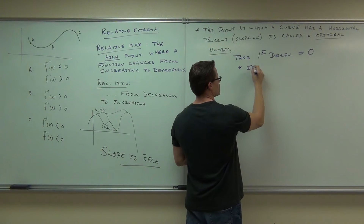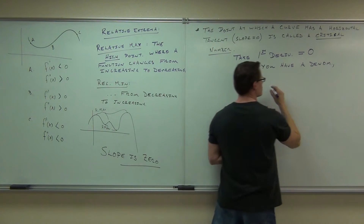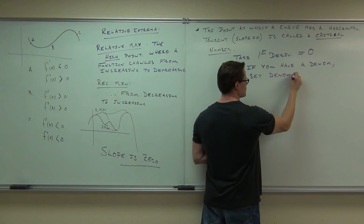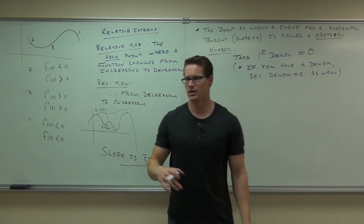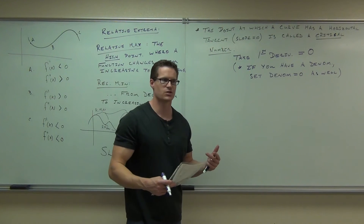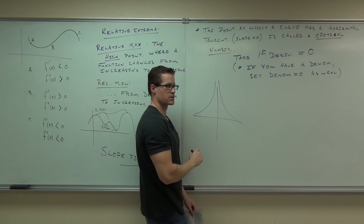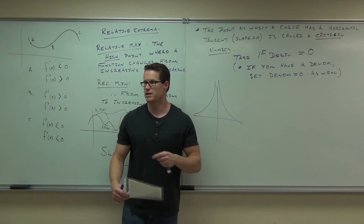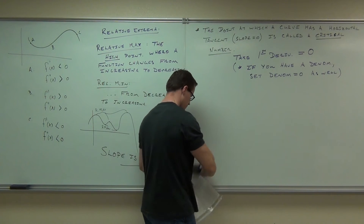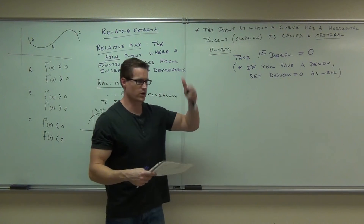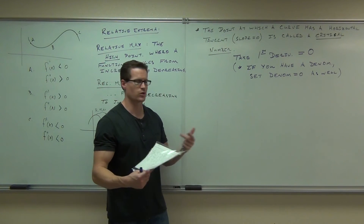So little note: if you have a denominator, set the denominator equal to zero as well. That could give you any undefined points for your slope, which would be a big deal. You can change from increasing to decreasing at undefined points. Even though it's not differentiable, that gives you a point of change of increasing and decreasing. So denominator of the first derivative? Set it equal to zero. The denominator of the original function will just tell you where you're undefined — a lot of times that will match up. Where you're undefined in the function is often where you'll be undefined for your slope, but occasionally you get some weird stuff, so you need to do both.